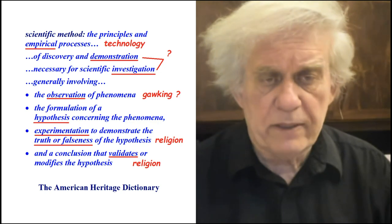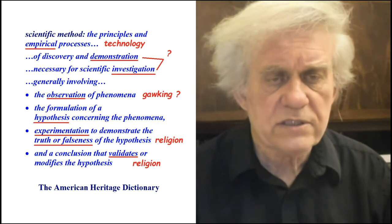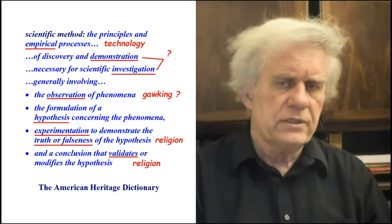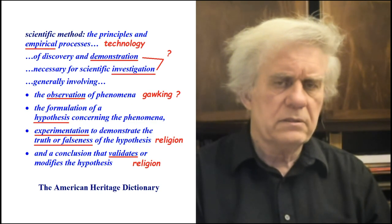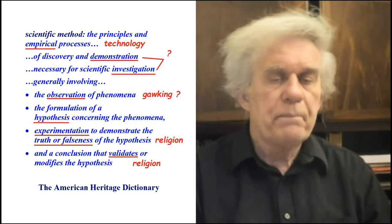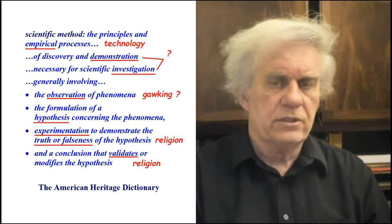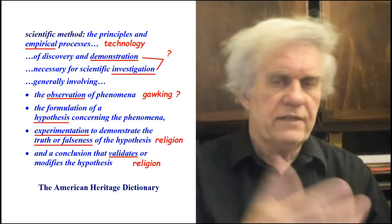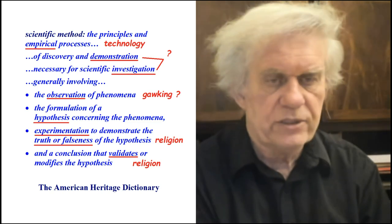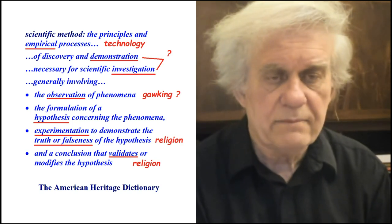Then the definition says 'experimentation to demonstrate the truth or falseness of the hypothesis.' Truth and falseness are opinions - what is true to you is a lie to your neighbor. That is religion. To do an experiment to prove falsity or truthfulness is talking about religion, not science. And finally it says 'a conclusion that validates or modifies the hypothesis.' Validates means you approved of it - that's also an opinion.